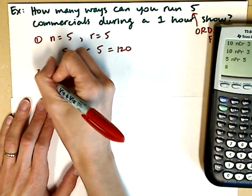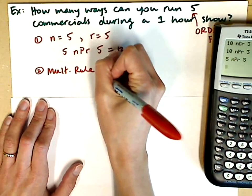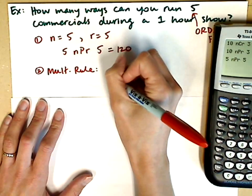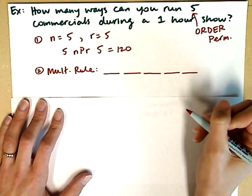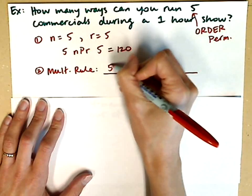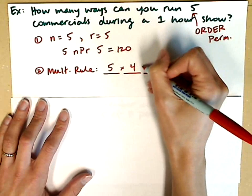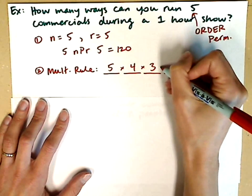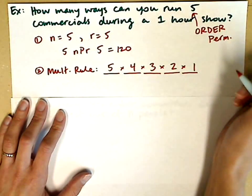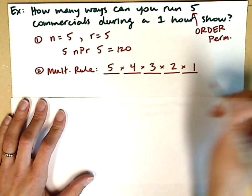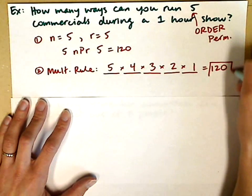This was a permutation, so we should be able to do this one with the multiplication rule as well. With the multiplication rule, we need to fill 5 commercial spots. We have 5 commercials, so we have 5 ways of selecting the first commercial. Then 4 ways of selecting the second. Now we've got 2 down, so 3, 2, and then 1. If we multiply 5 times 4 times 3 times 2 times 1, we come up with 120. Either method works.